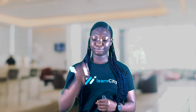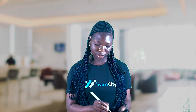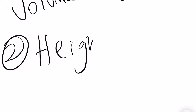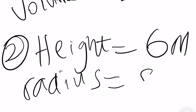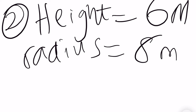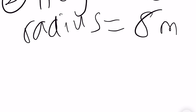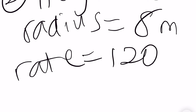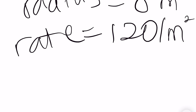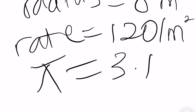The second example says: a conical tent is 6 meters in height and its base radius is 8 meters. Find the cost of the canvas required to make the tent at a rate of 120 per meter squared. Our pi is given as 3.14.